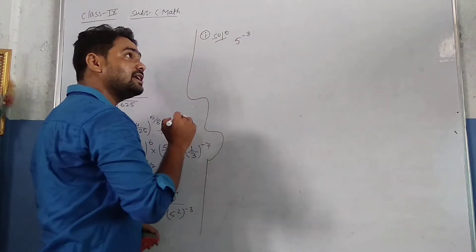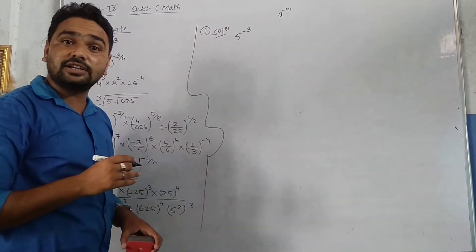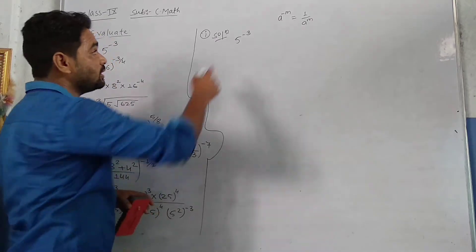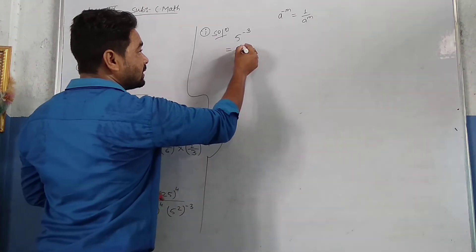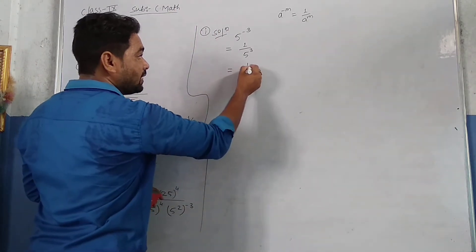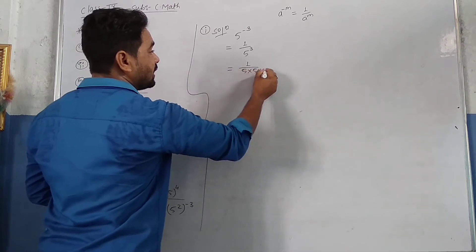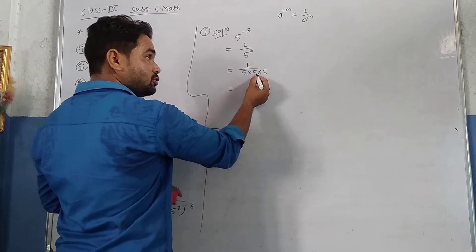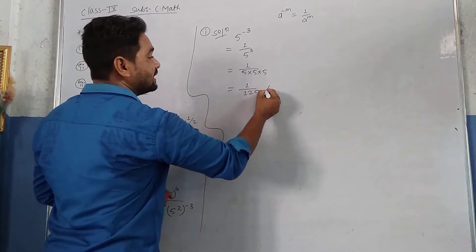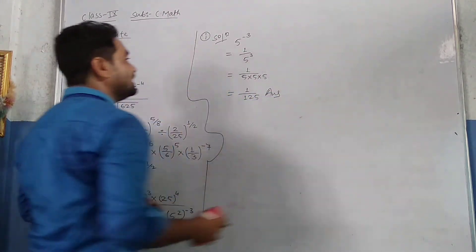So A power minus M equals 1 upon A power M. Apply the same law: we get 1 upon 5 power 3. Now 1 upon 5 power 3 — we calculate 5 three times: 5 into 5 is 25, 25 into 5 is 125. So we get 1 upon 125. That is our answer for the first one.